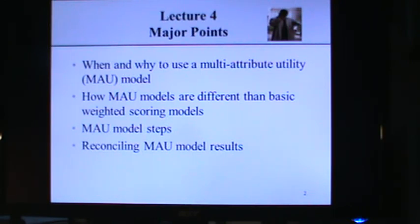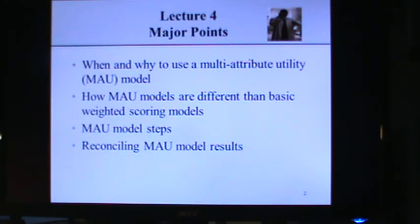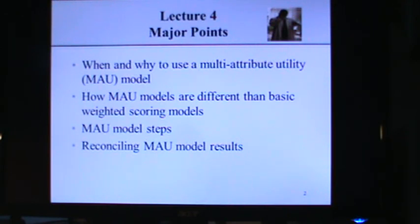When you did assignment one, part two, you actually had to take a situation where an Italian restaurant was trying to locate in one of three different locations, with a number of attributes across each location including appearance and other things. You did a weighted scoring model because you scored each of the attributes for each location, you weighted them, you multiplied the weights and scores, and you discovered that location one, which had a score of 380, was the best location.